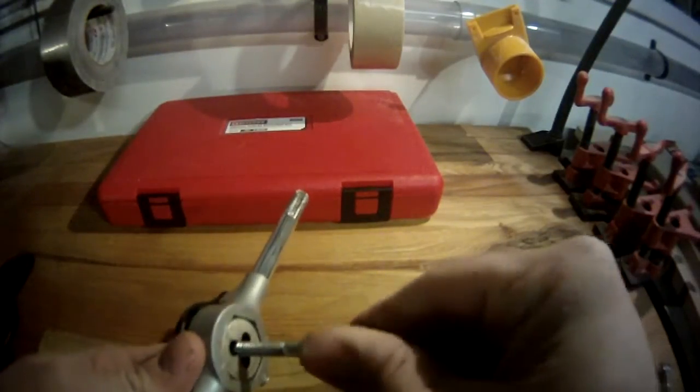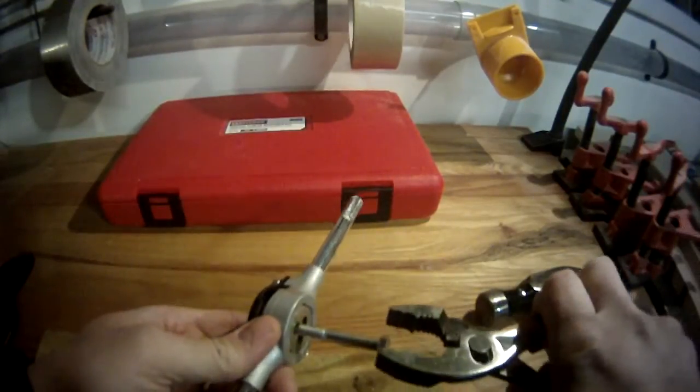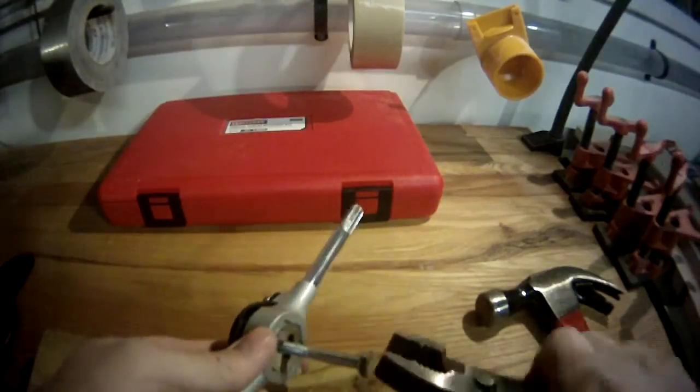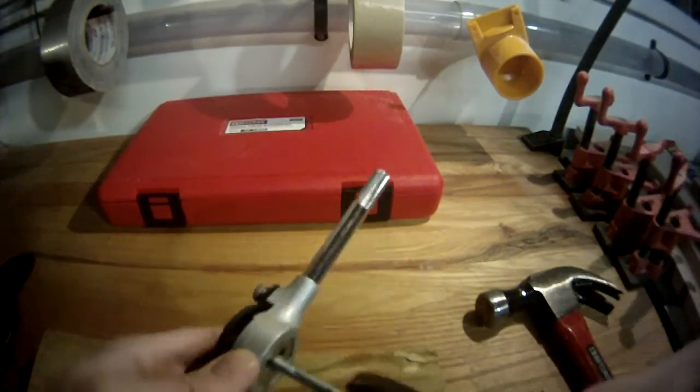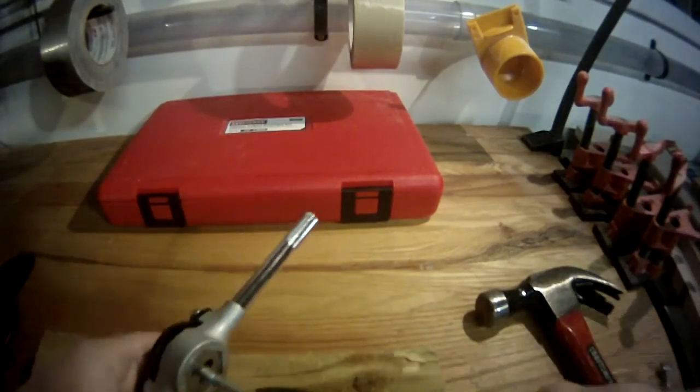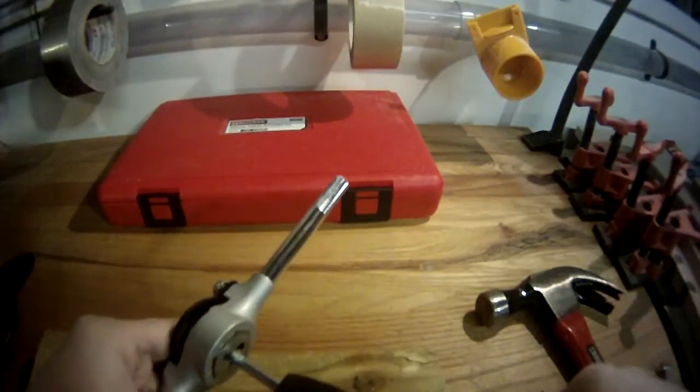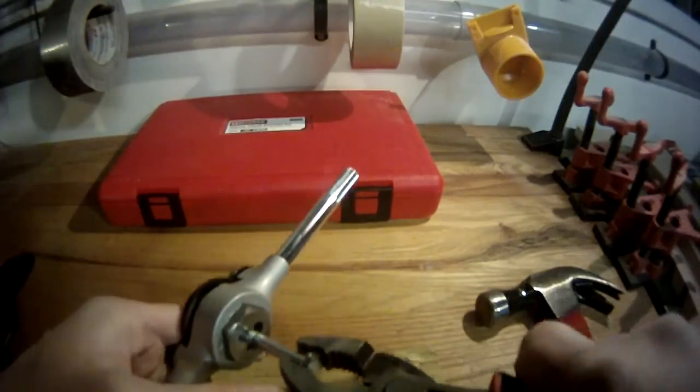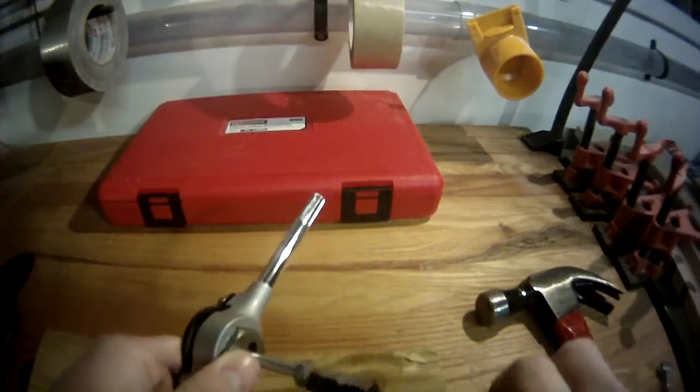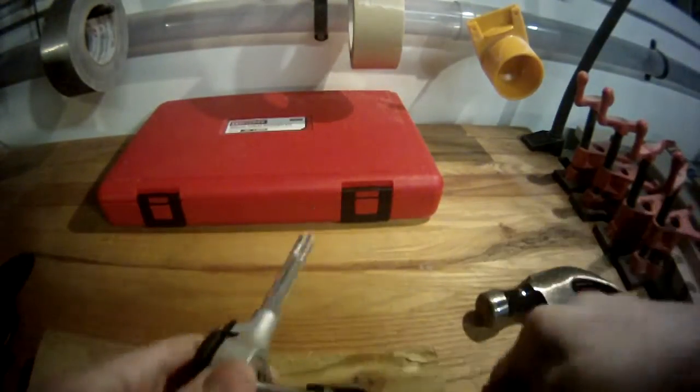We're going to use the other bolt that we damaged before and put this into our die. I'll take out my pliers here. Luckily with the accessories from the die set, I don't have to hold two sets of pliers. I can definitely feel this bite into the damaged section.